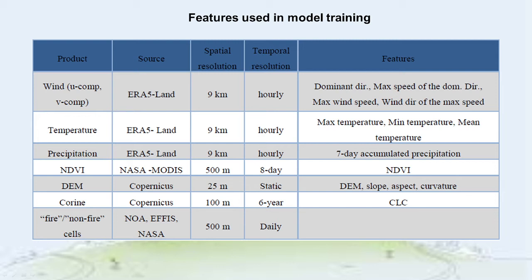Meteorological data were derived from ERA-5 Land. We obtained temperature, wind and precipitation for a total of 8 years from 2010 to 2018. The temporal resolution is hourly and the spatial resolution is 9 km. From the hourly data, we derived daily aggregations of maximum temperature, minimum temperature, mean temperature, dominant wind direction, maximum wind speed and accumulated precipitation of the past 7 days. The Normalized Differential Vegetation Index, known as NDVI, was collected from a NASA product that offers an 8-day interval accumulation of NDVI from the MODIS satellite instrument. The digital elevation model was collected from Copernicus DEM at 25 m spatial resolution, and this DEM was processed to derive morphologically related features: elevation, slope, aspect and curvature.